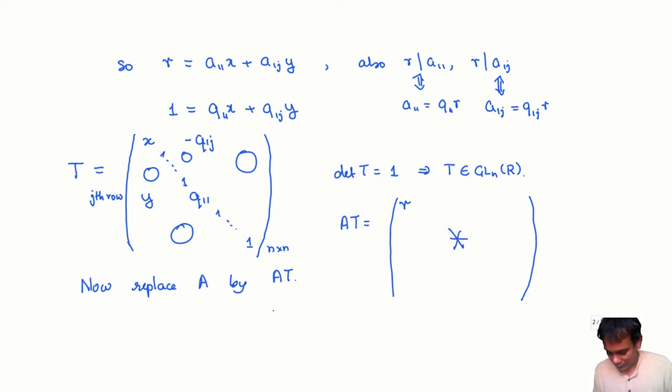The point is that the ideal generated by r strictly contains the ideal generated by a_11. And A is equivalent to AT because T is in GL_n(R).